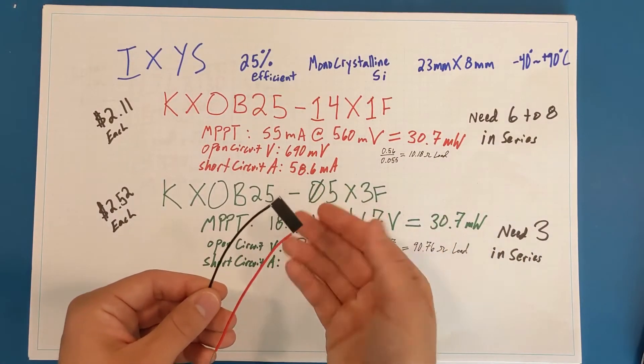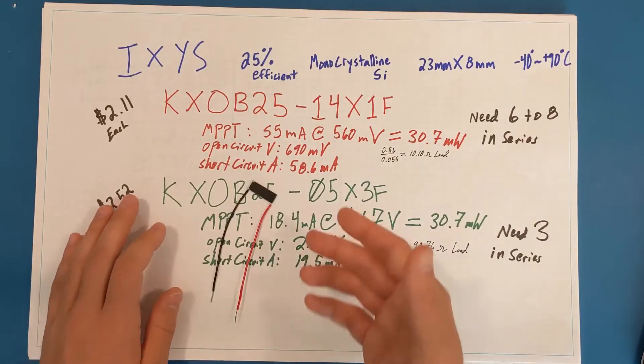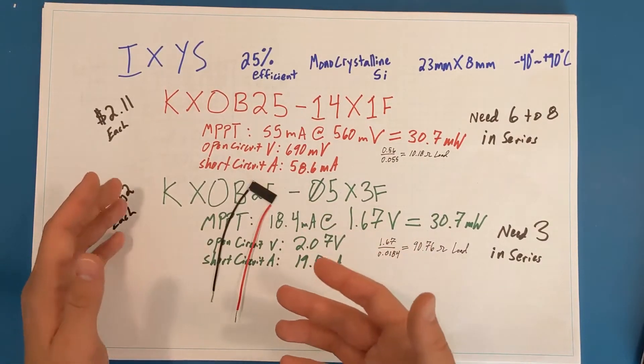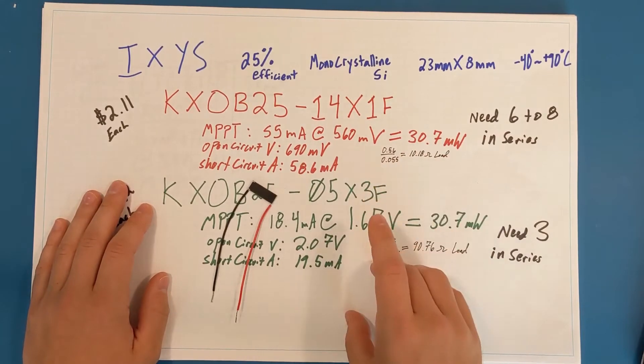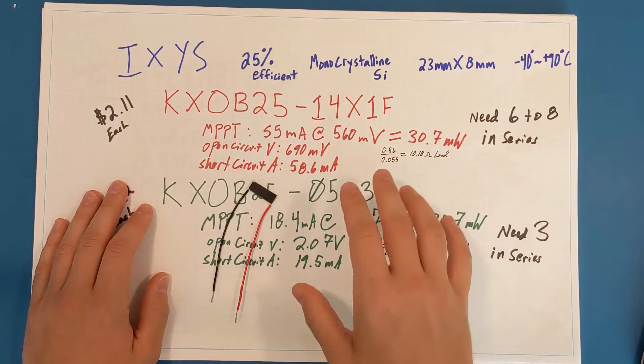So how do I get useful power out of these solar cells? I'd like to target a 5 volt output and use that as an input for my battery charger, since there's a ton of options for 5 volt battery chargers because that's the default USB voltage.